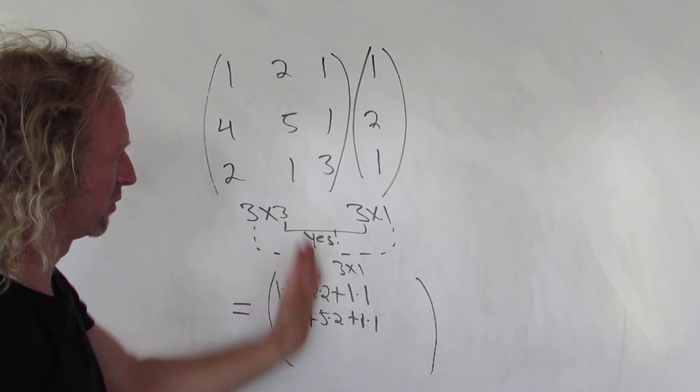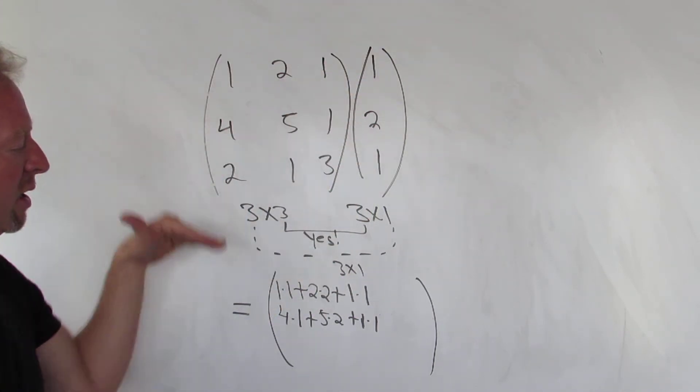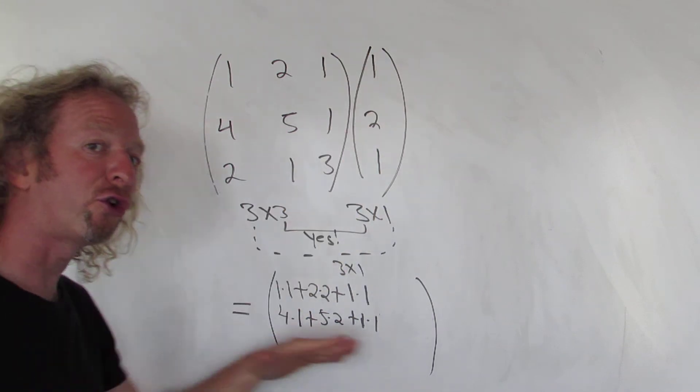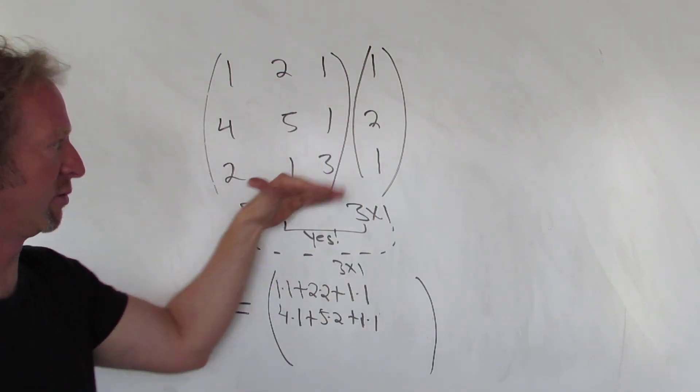So the first row, first column, we use the first row, first column. Second row, first column, we use the second row, first column. Third row, first column, we use the third row, first column.